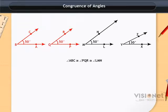So we have angle ABC, angle PQR and angle LMN congruent to each other. Note that all the three angles are of same measure. That is 50 degrees.